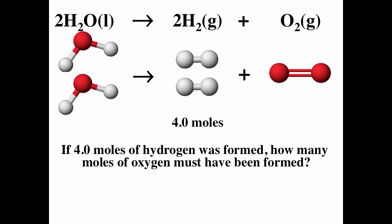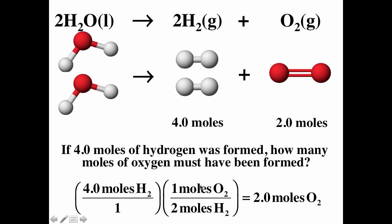If four moles of hydrogen was formed, how many moles of oxygen must have been formed? We're going to use the reaction to give us this fraction: we get one mole of O2 for every two moles of H2. We started with four moles of H2, so we put the moles of H2 on the bottom so they cancel. Four divided by two is two, so that leaves us with two moles of O2. Watching your units is very important — you should always pay attention to your units.